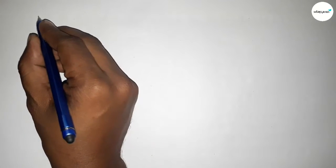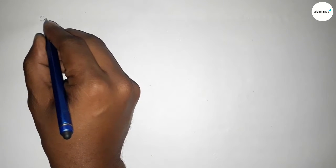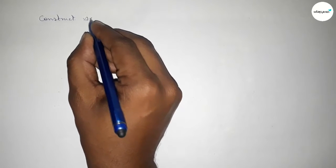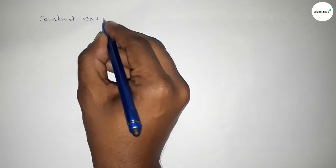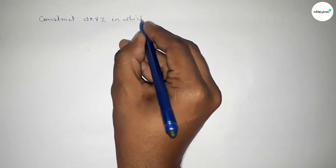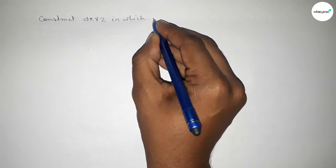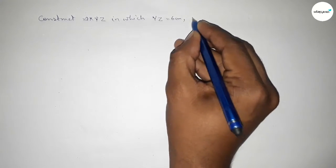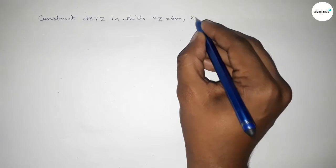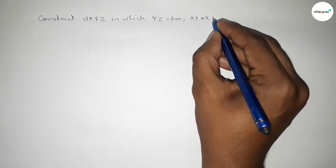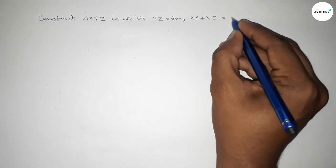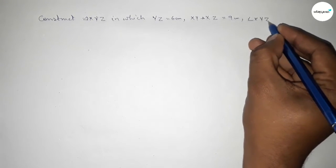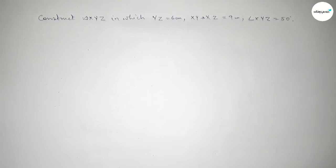Hi everyone, welcome to SSR Classes. Today in this video we have to construct a triangle XYZ in which YZ equals 6 centimeter, XY plus XZ equals 9 centimeter, and angle XYZ equals 50 degrees.